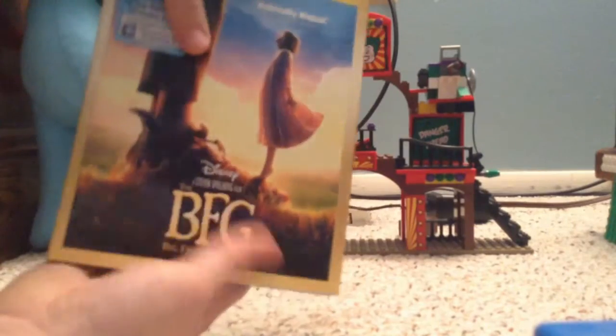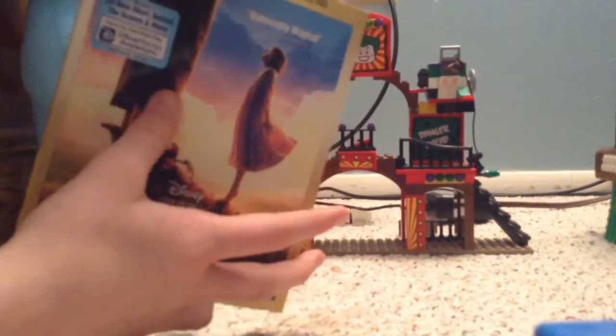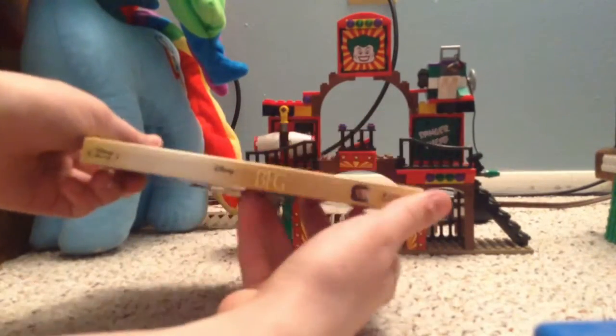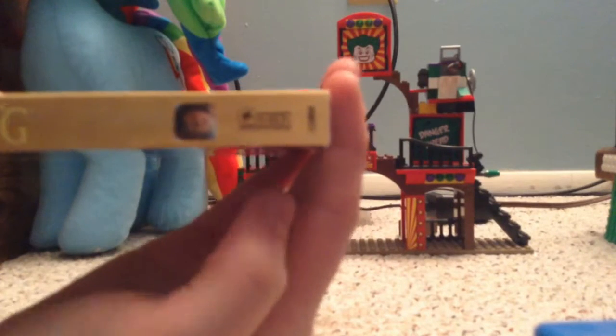It's an embossed slip cover, the logo, and the girl, and the BFG himself. This is fine, it's gold, like Alice through the looking glass. It's the same, and this is also an Amblin release.